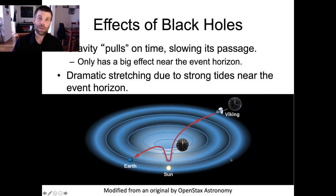That's illustrated on the panel on the bottom of the slide, and you can see that for the Viking spacecraft, which is very far from our Sun and therefore less influenced by the Sun's gravity than the Earth is, more time has passed than for a clock that's close to the Sun. And the same thing will happen for black holes, but on steroids.